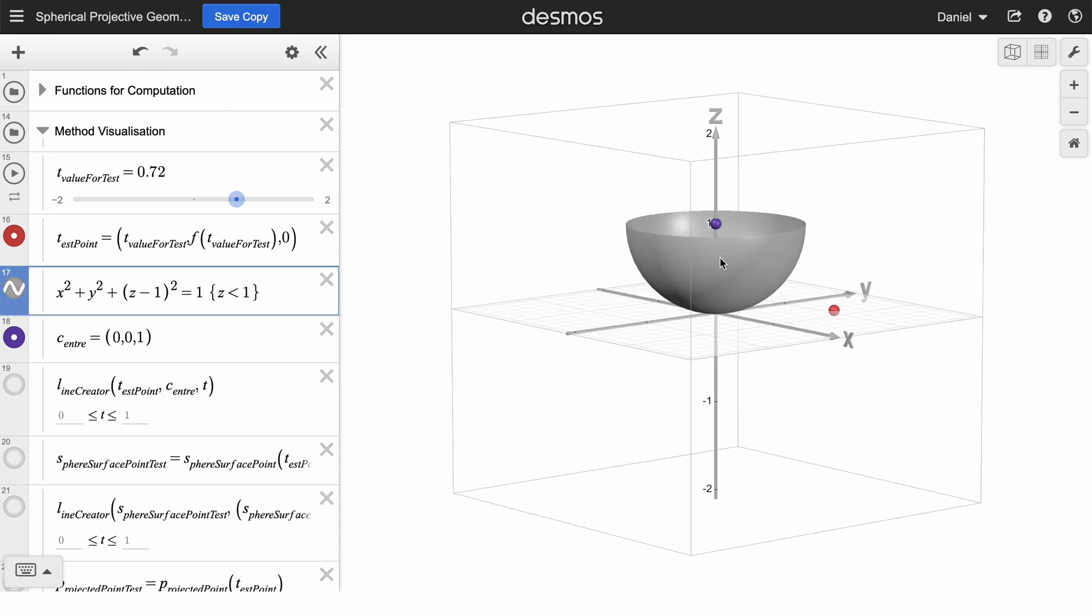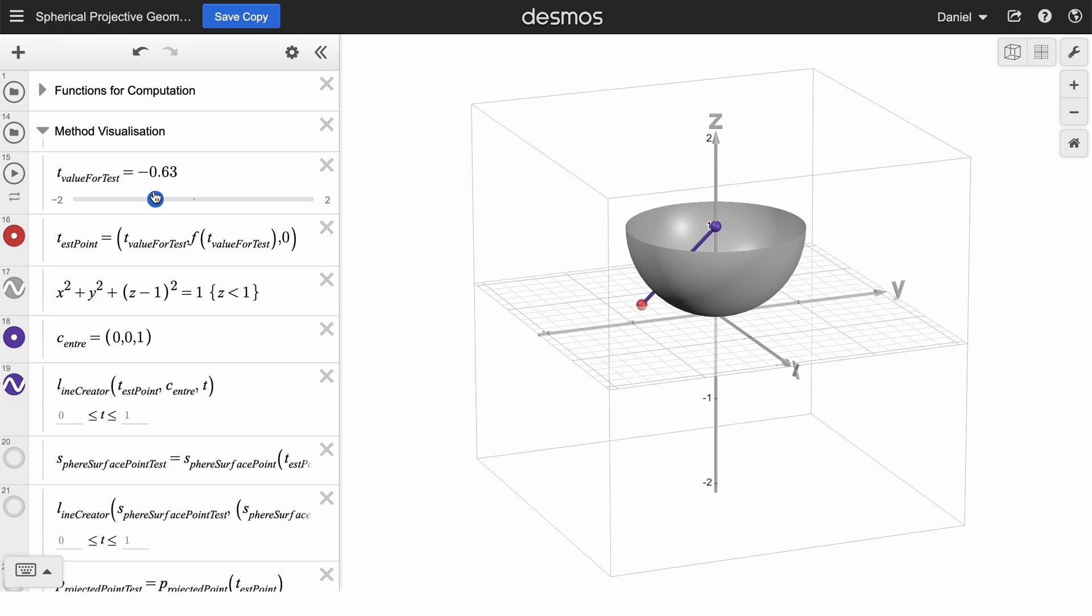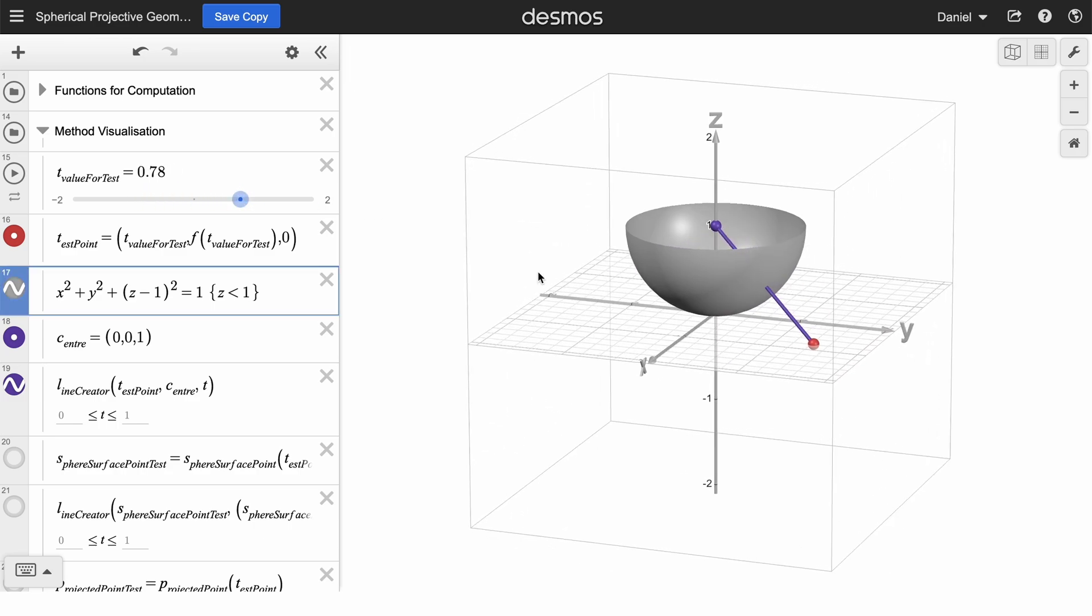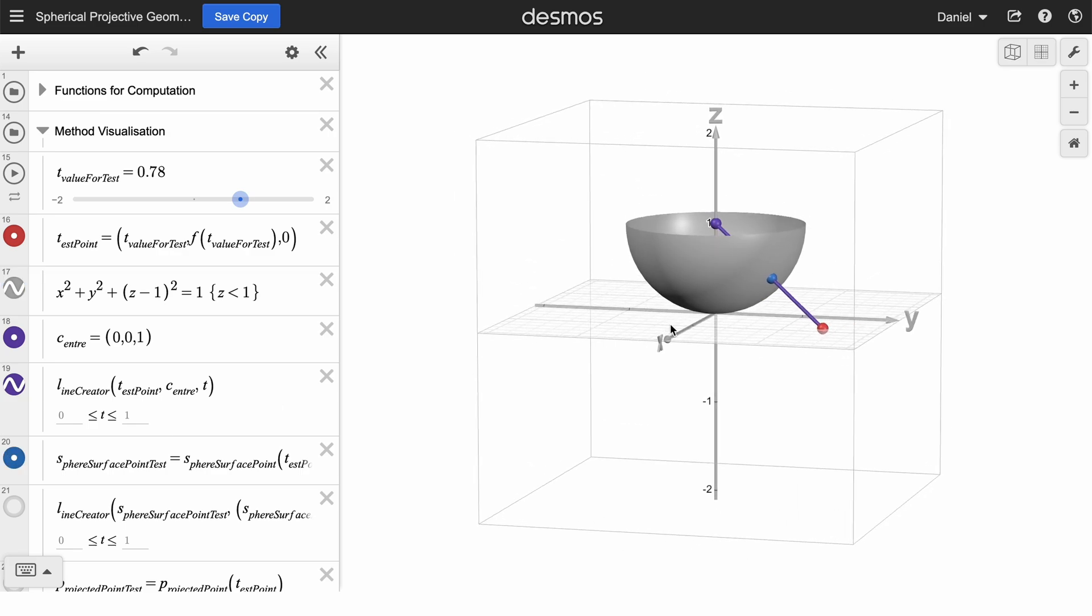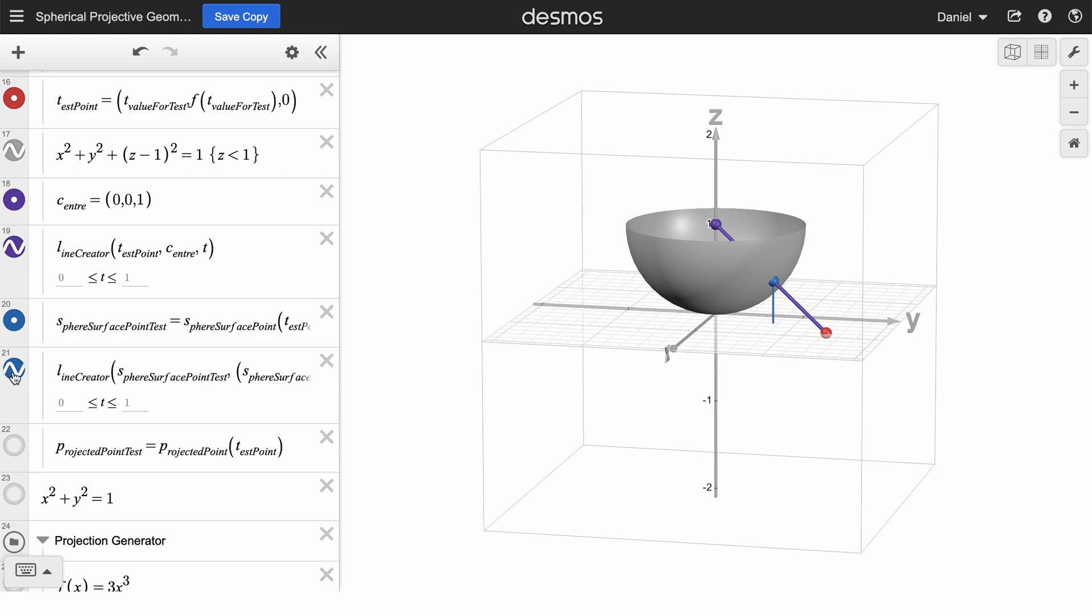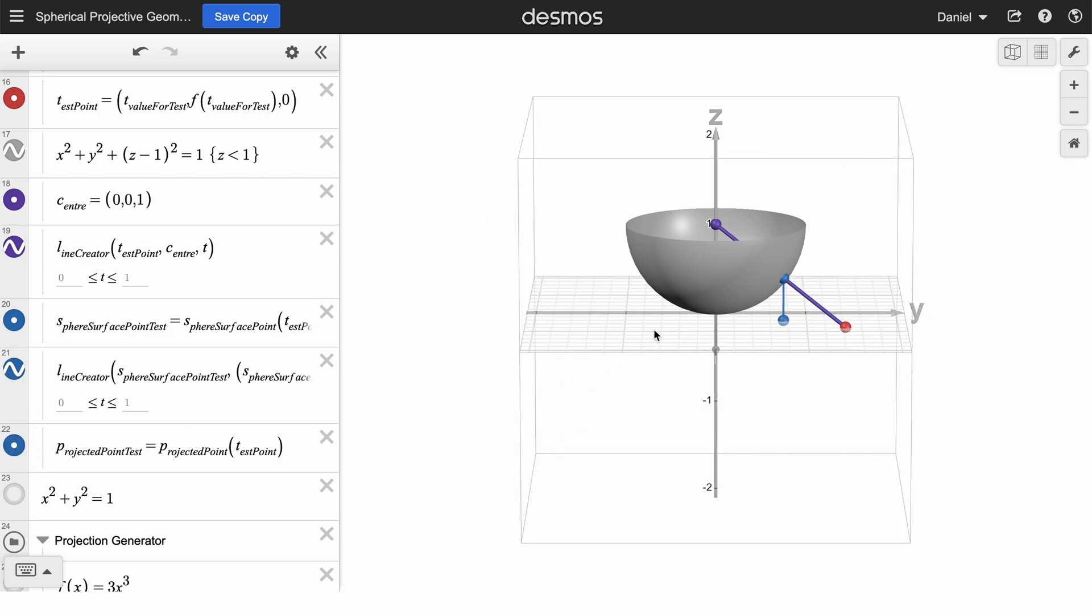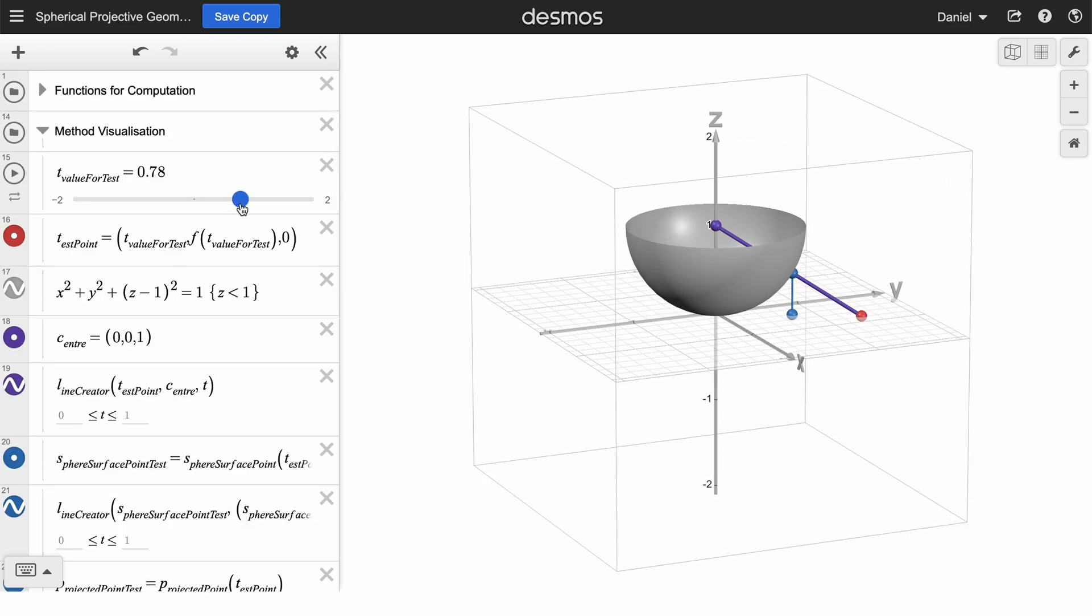And now if I label the center, consider the straight line that goes between this center and the point on the xy plane. As I move the red point around, this purple line also moves. And let's consider the intersection between the purple line and the hemisphere, which is labeled by this blue point over here. If we now draw a line straight down from the blue point and mark where it intersects with the xy plane, all of these points and lines now move as I move the original red point.